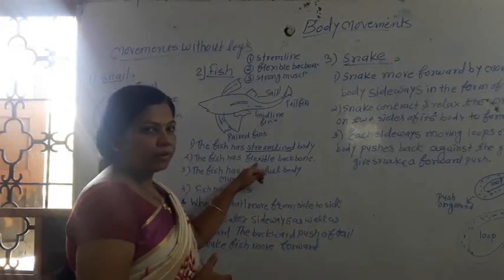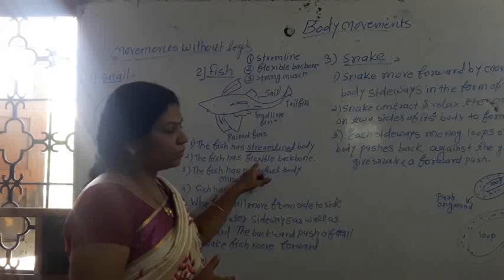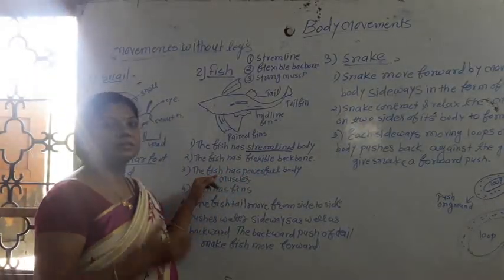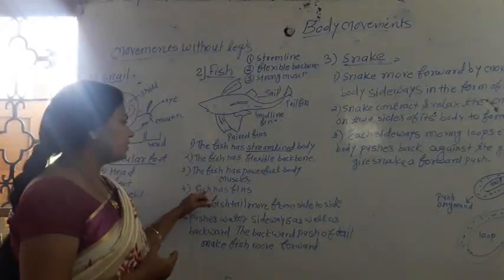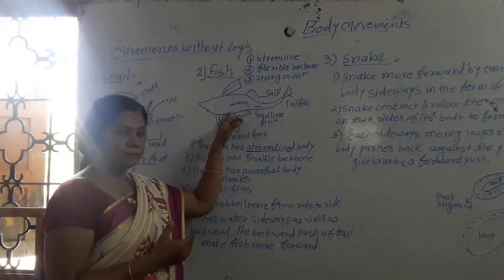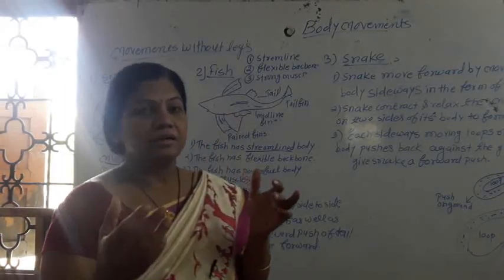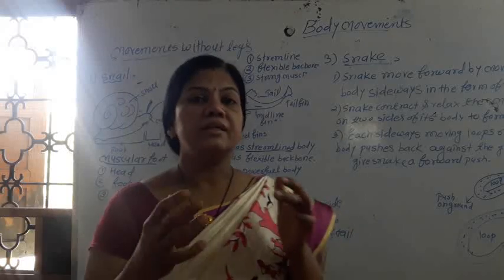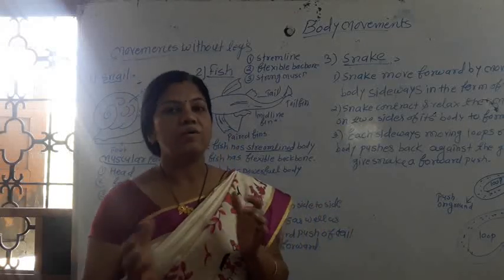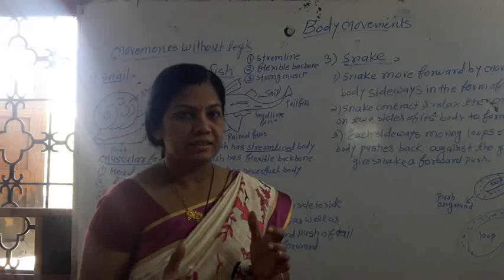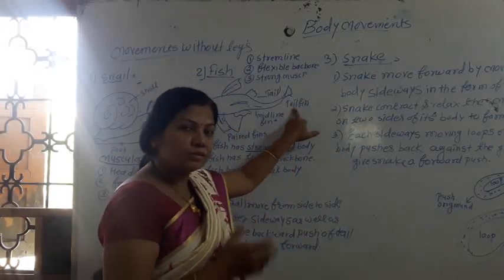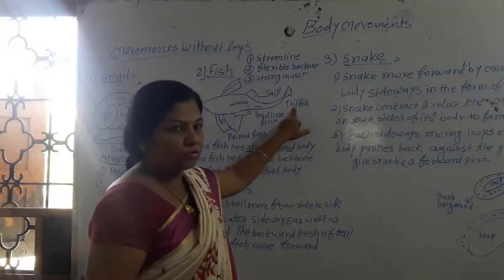Fish has a flexible backbone. Fish has powerful body muscles. Fish has fins, which help the fish to balance its body easily. It also has tail fins which help the fish to move forward.